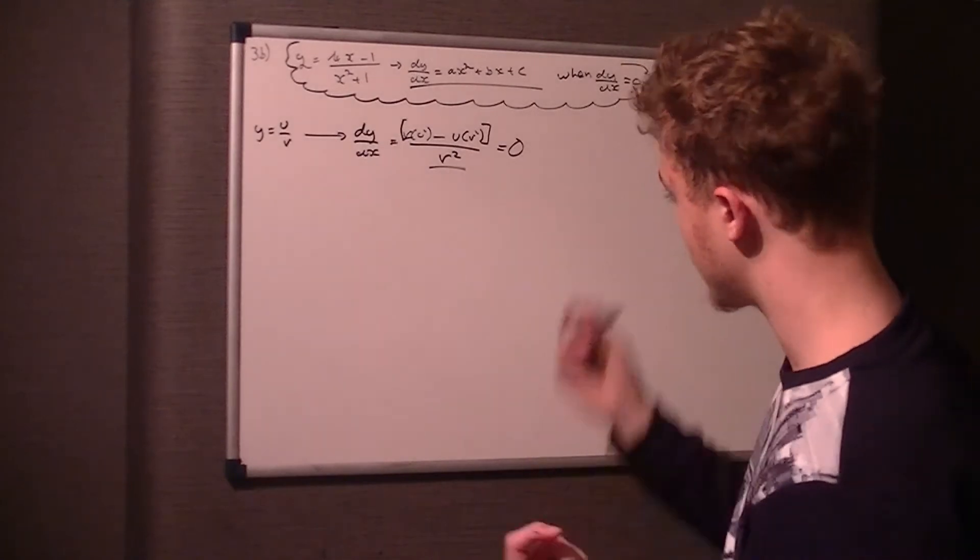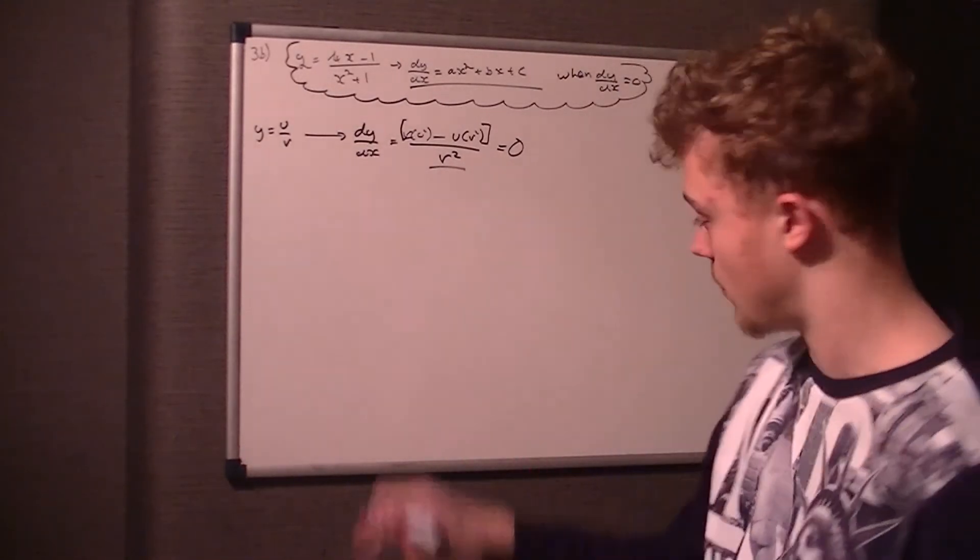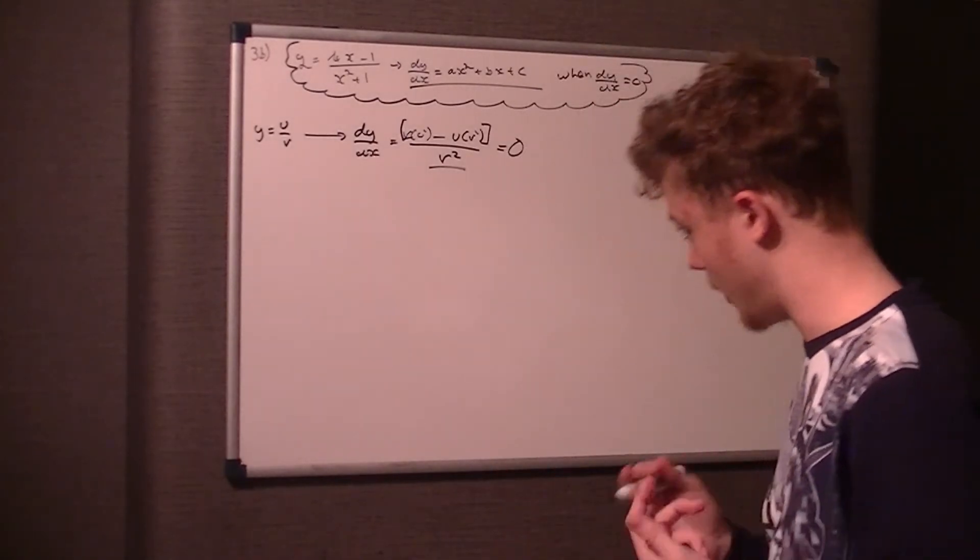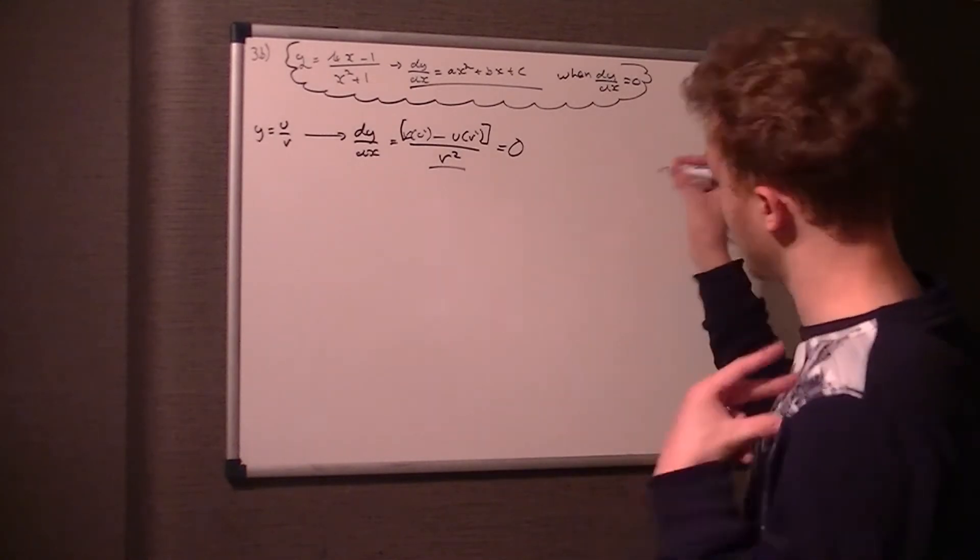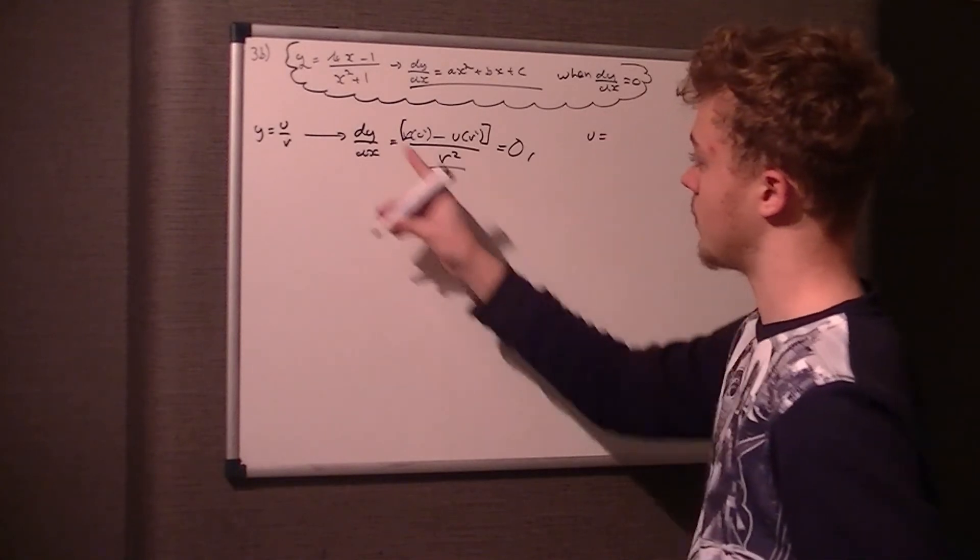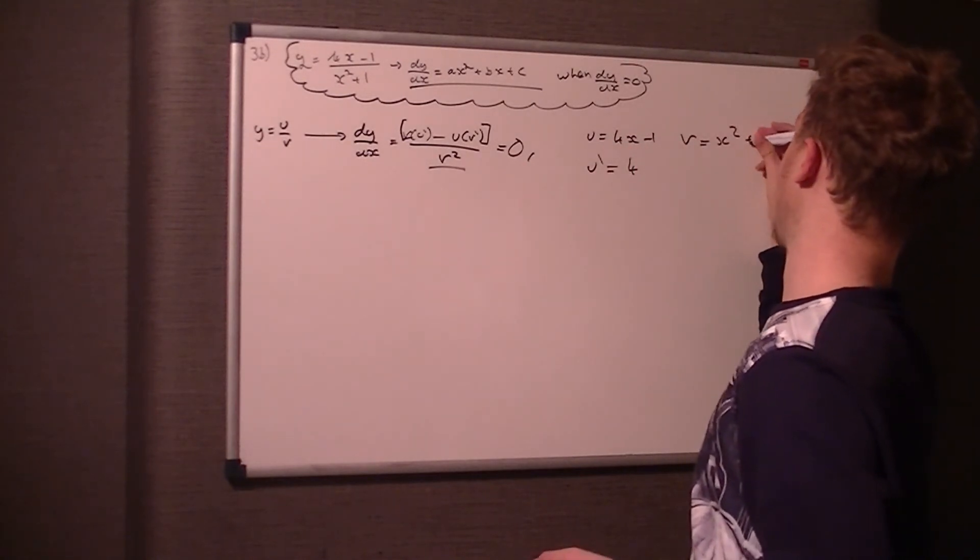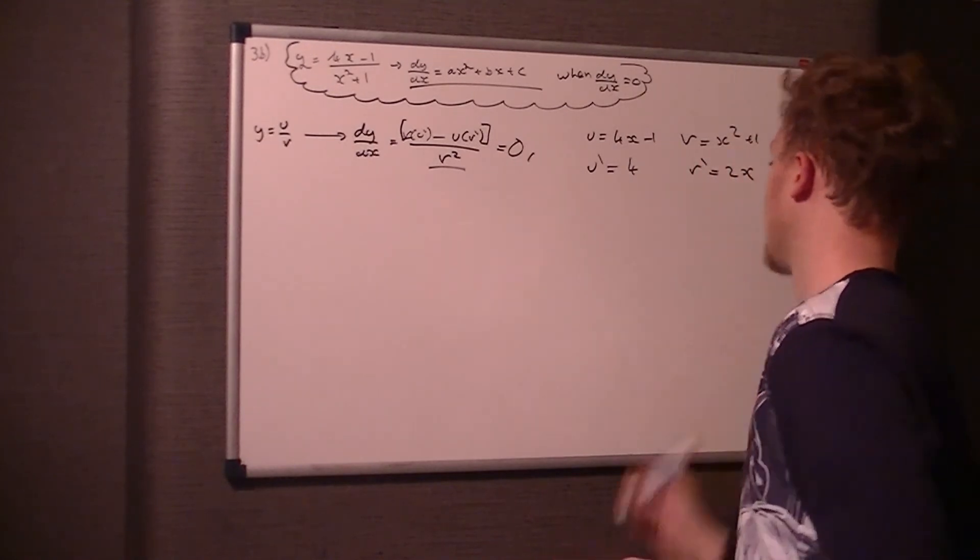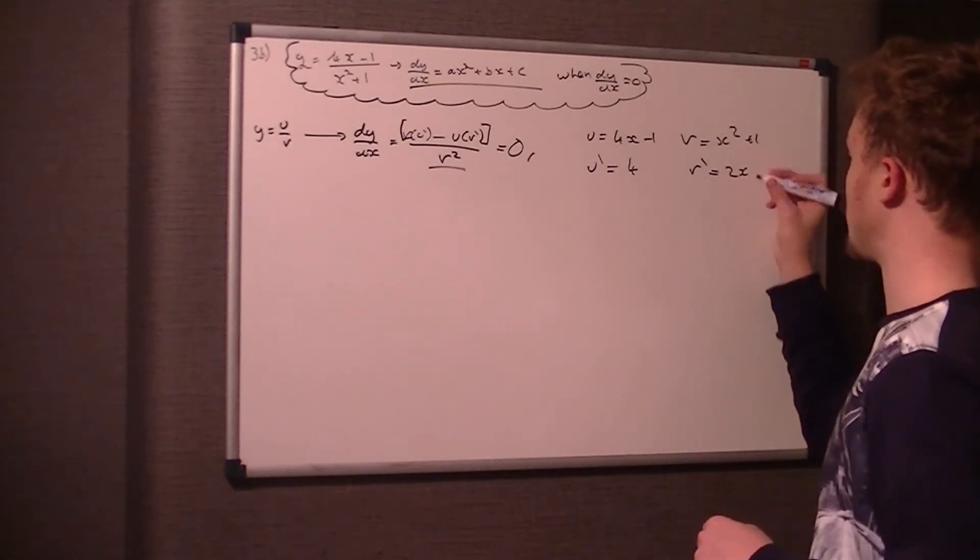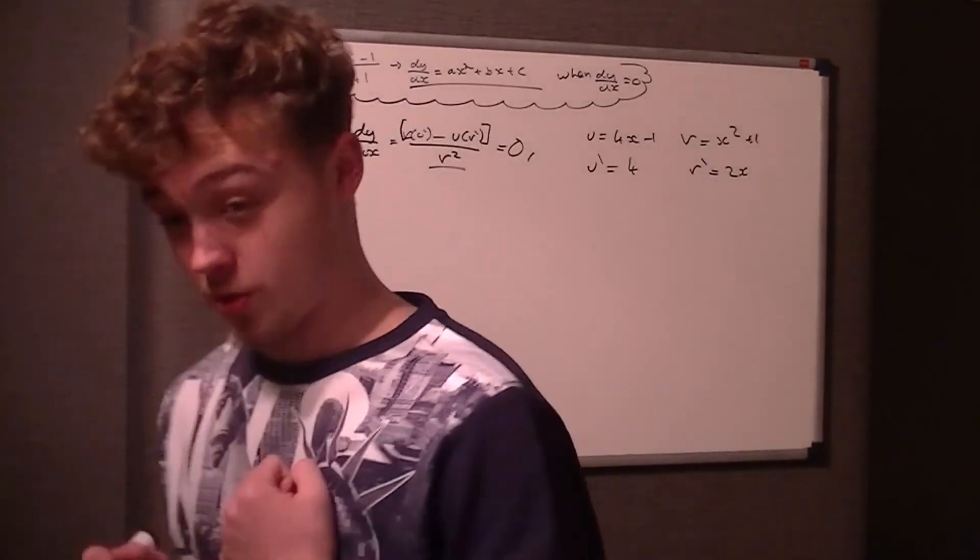The first thing I would do is write down what u, v, u', and v' are. u is the top figure, so it's 4x - 1. If we differentiate 4x - 1, u' is just 4. v is x² + 1, and v' just becomes 2x. Be careful it's 2x, not just x or 1.